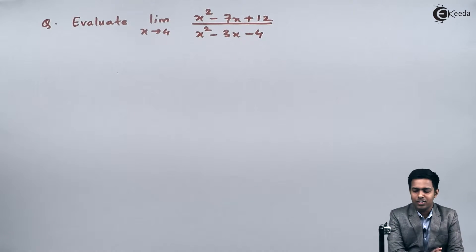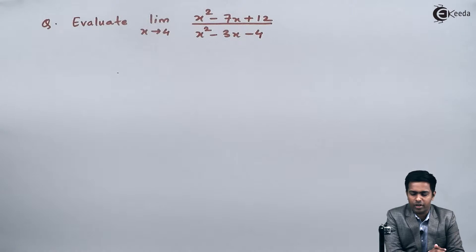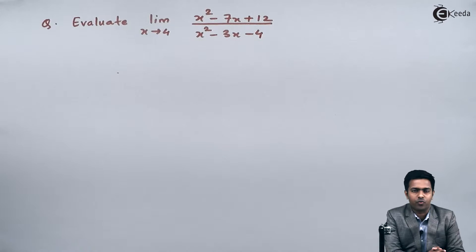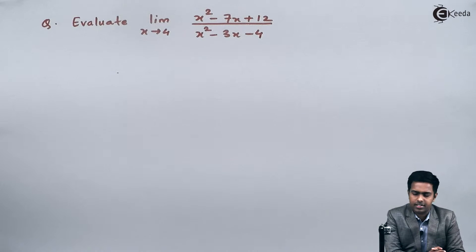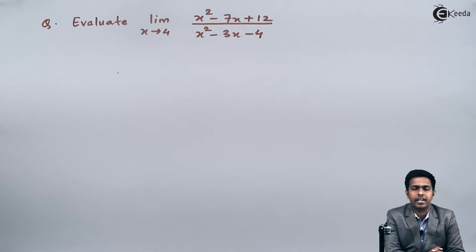Hello everyone. In this problem we have to evaluate the limit as x tends to 4 of x squared minus 7x plus 12, whole divided by x squared minus 3x minus 4.